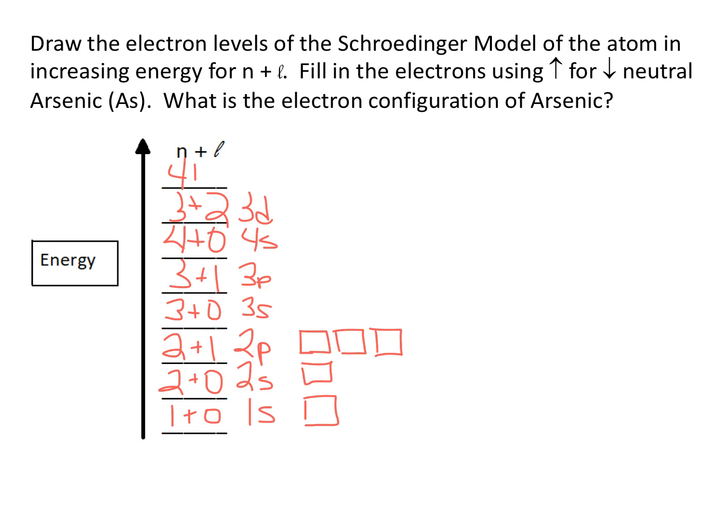And then of course there's 4 plus 1, which is the 4p. Now I'd like to draw boxes associated with this. So S's are one banana. P's are three banana bunches. S is one. And then D, you may remember, comes in a group of five, because there are five potential values for M sub L. And P comes in bunches of three. We have now drawn the energy levels in increasing N plus L values.